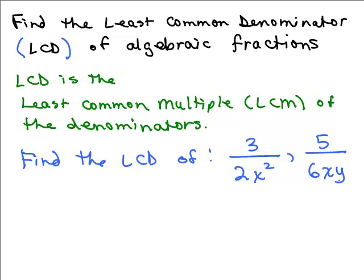We're going to build up the denominator. We begin by simply writing down the first denominator, making sure it's fully factored. You could write the 6 as 2 times 3. So I need a 2, and I'm going to have an X squared — I need 2 X's to take care of that 2X squared, so I'll break it all the way down.